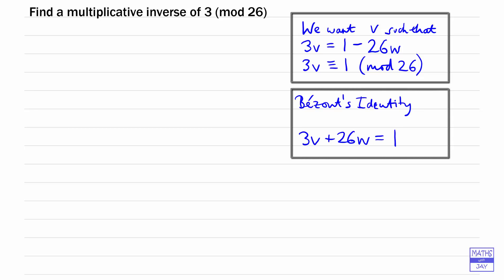That's really the same as what I've written above. So that's the same as saying 3v is 1 minus 26w. So how are we going to do that? We can start off by using Euclid's algorithm.